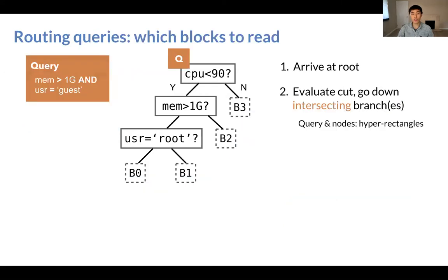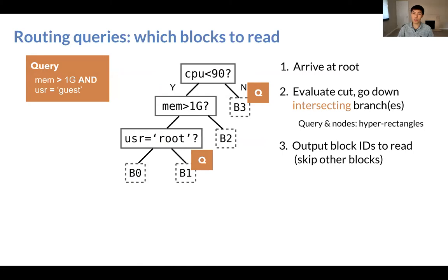The second operation supported by QD-tree is routing queries, and it is very similar to before. Now, the only difference in this case is that a query is a hyper rectangle. That's why it could potentially intersect with both branches. So in this case, we route the query down both branches until it is fully routed to the leaf level. So now we know exactly what blocks are required by this query, such as B1 and B3 in this example, and all other blocks can be safely skipped.